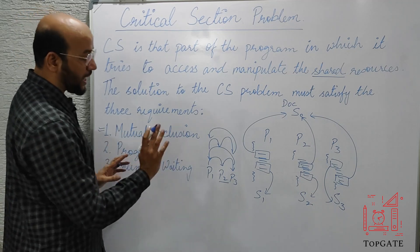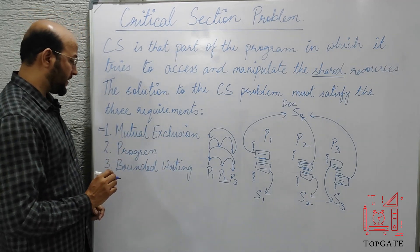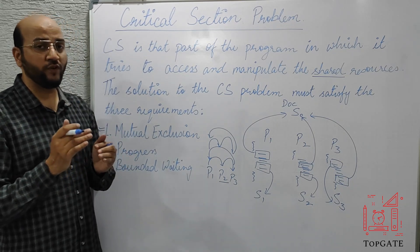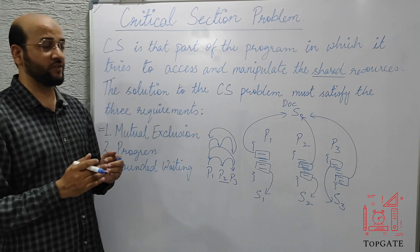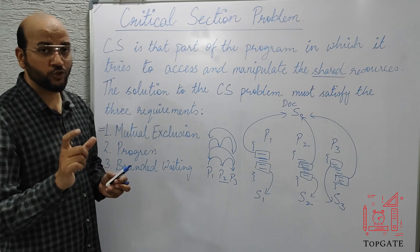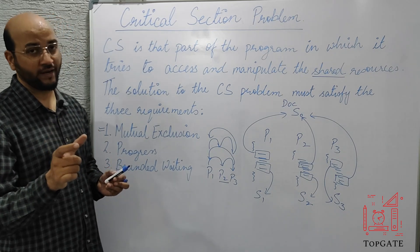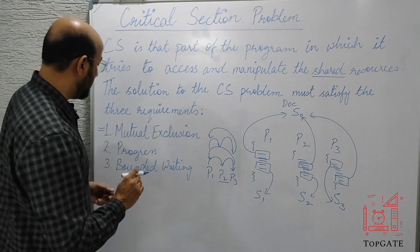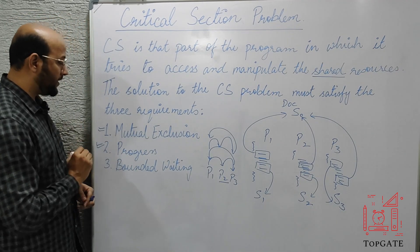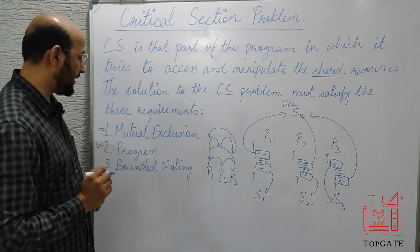This should not happen. Progress says that the decision of which process will enter into the critical section next will be taken only by those processes that are actually willing to go to the critical section. This is also a mandatory requirement in order to solve the critical section problem.